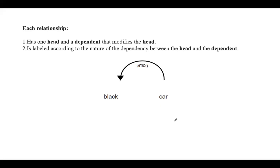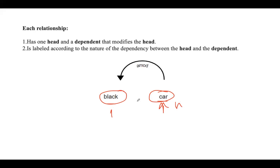For example, here is a simple dependency relationship between two words. There exists a relationship between 'car' and 'black' because the word 'black' modifies the meaning of 'car' — making it 'black car'. Here, 'car' acts as a head and 'black' is a dependent.